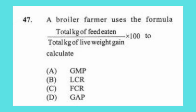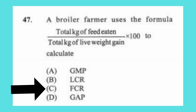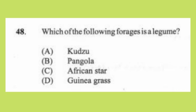Question 47: A broiler farmer uses the formula (total kilograms of feed eaten ÷ total kilograms of live weight) × 100 to calculate (a) GMP, (b) LCR, (c) FCR, (d) GAP. The answer is C, FCR, which is feed conversion ratio.